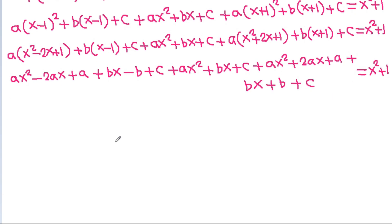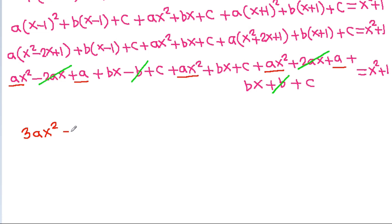And now, the -2ax and +2ax will get cancelled, and -b and +b will get cancelled. And ax² plus ax² plus ax² will be 3ax², and a plus a will be 2a, and bx plus bx plus bx will be 3bx. And c plus c plus c will be 3c.